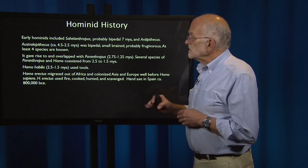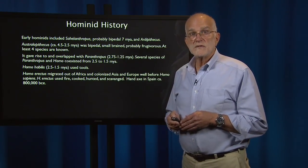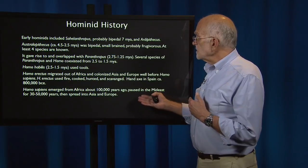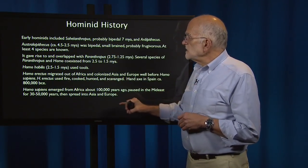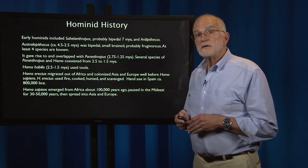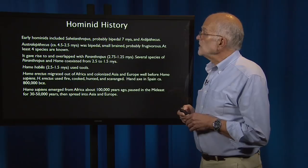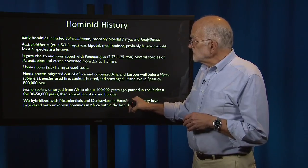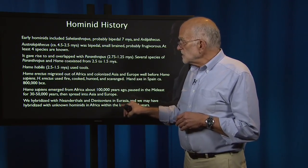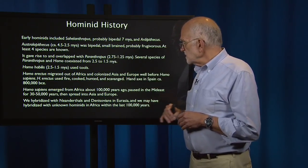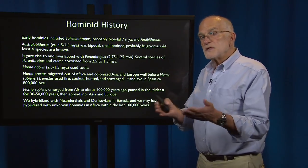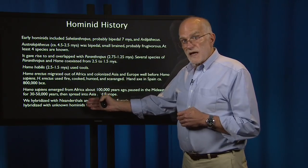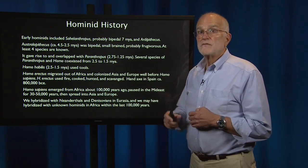Hand axes from Homo erectus have been found in Spain from about 800,000 years ago. Homo sapiens evolved in Africa, emerged about 100,000 years ago, paused in the Middle East for 30 to 50,000 years, then spread into Asia and Europe, where we hybridized with Neanderthals and Denisovians. We may have also hybridized with unknown hominids in Africa within the last 100,000 years. People who have been in Europe carry Neanderthal genes, while people who remained in Africa do not.